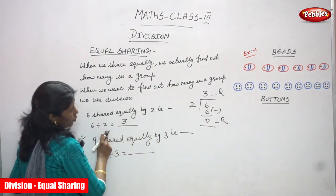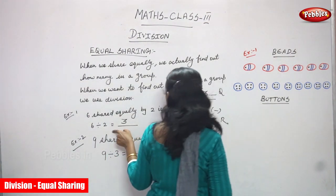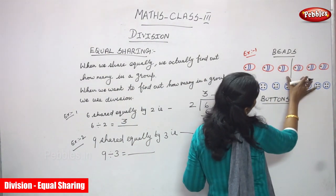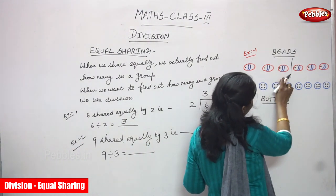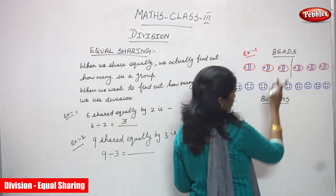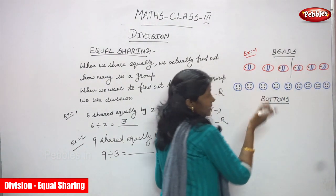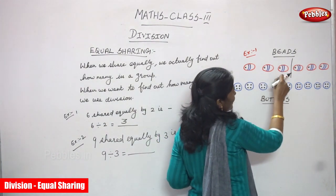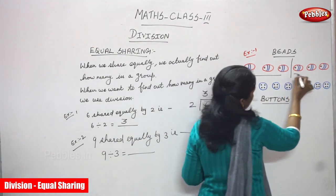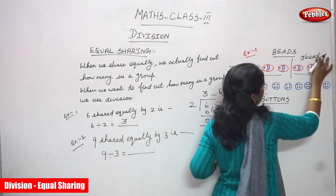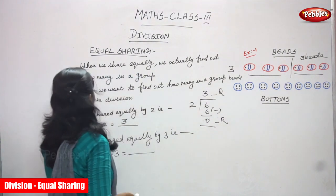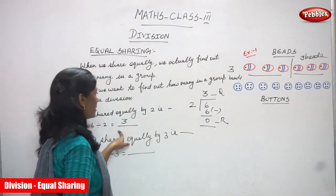There are 2 groups, and in each group there are 3 — so 3 beats in each group. How many beats are there? 6 beats. I segregate them into 2 groups. In each group, how many beats? 1, 2, 3 — that is 3 beats. So in each group you get 3 beats. How many groups? 2 groups. In each group, how many? That is what equal share means. So 6 shared equally by 2, you get 3. The answer is 3.